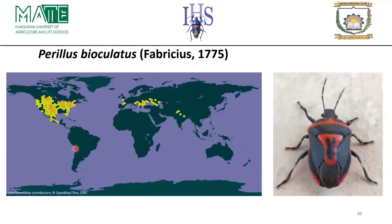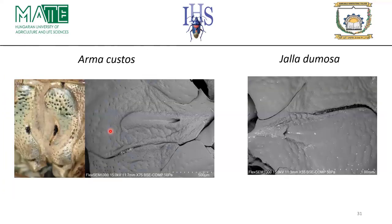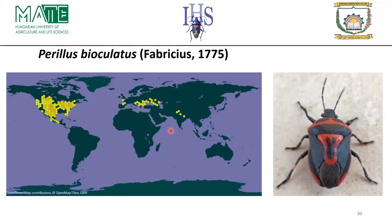Perillus bioculatus is native to North America and was recently introduced to Europe for combating or managing the Colorado potato beetle, but it has failed to survive due to winter and climatic conditions. However, it has been recorded feeding on many pest species belonging to Lepidoptera and was recently reported from Hungary via iNaturalist — a new record for Hungary.